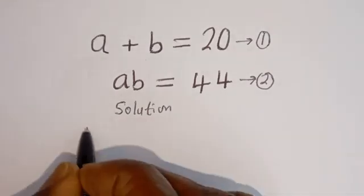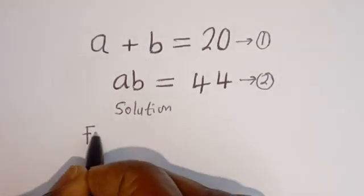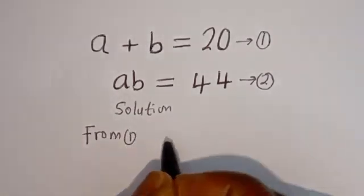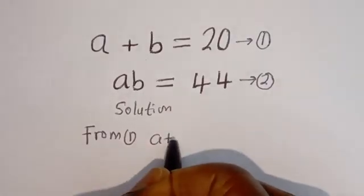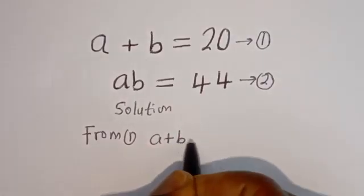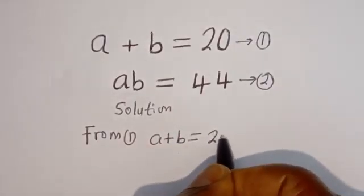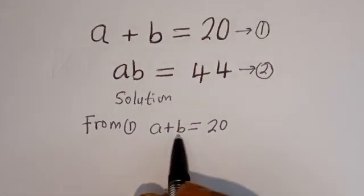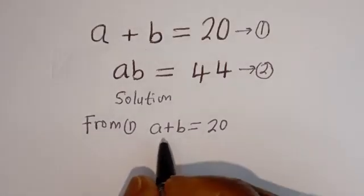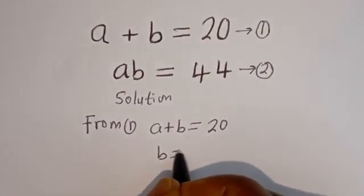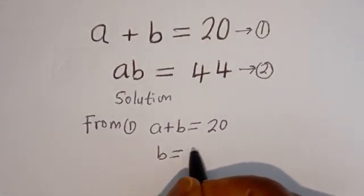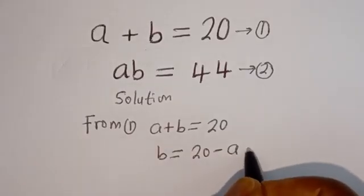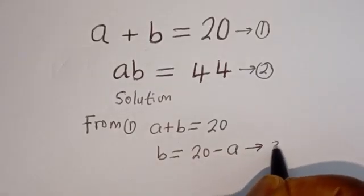Then from equation 1: A plus B is equal to 20. Let's make B the subject of the formula. B is equal to 20 minus A. Let's call this equation 3.